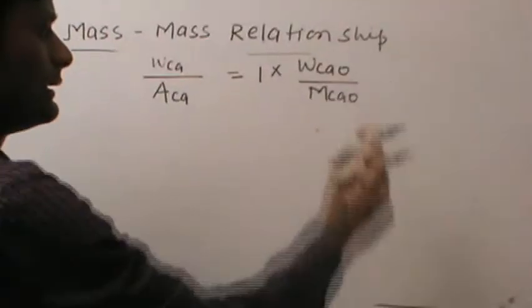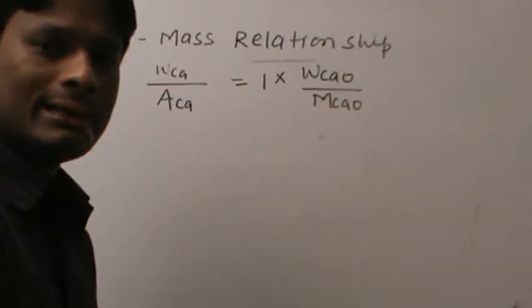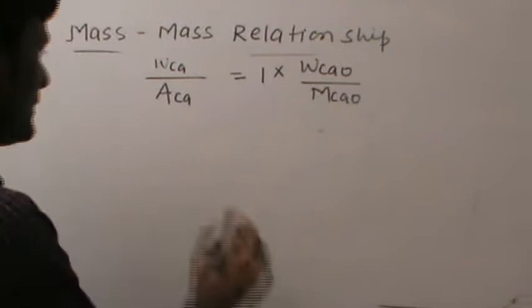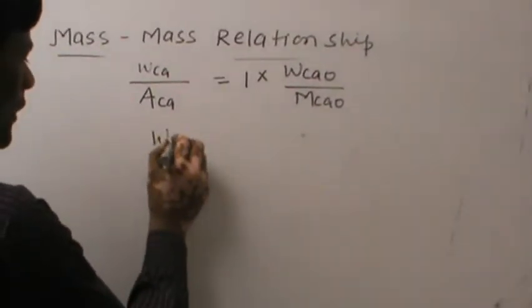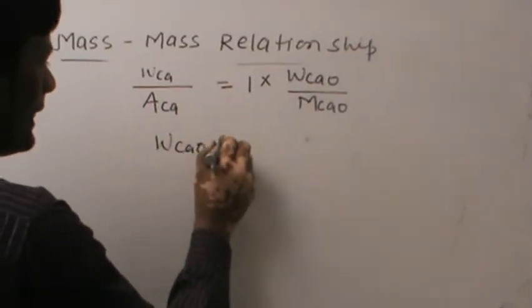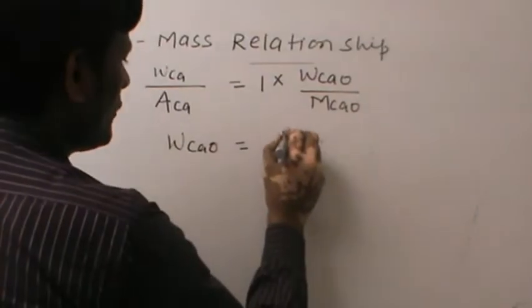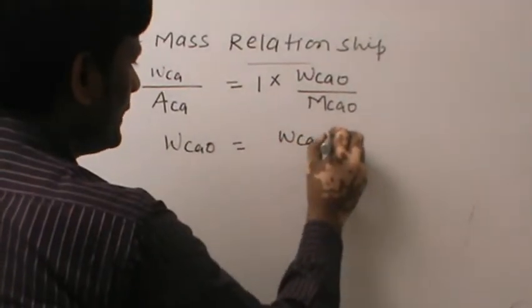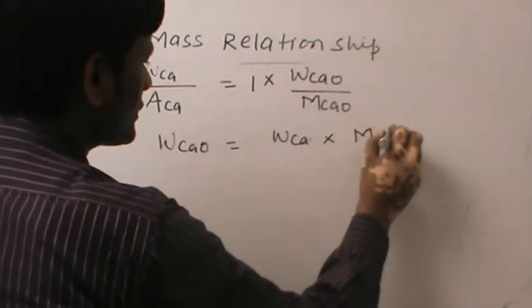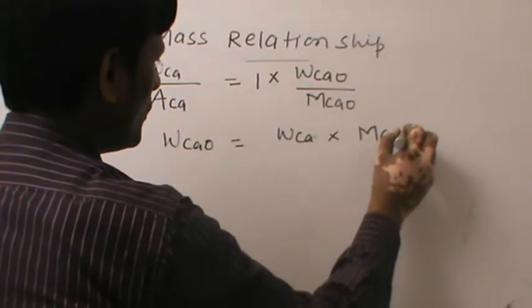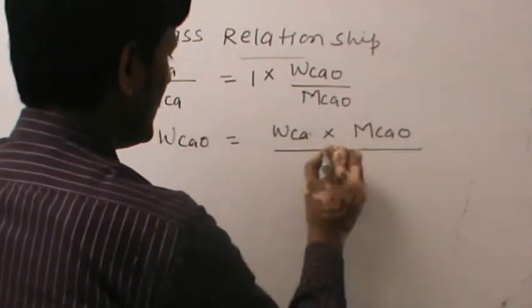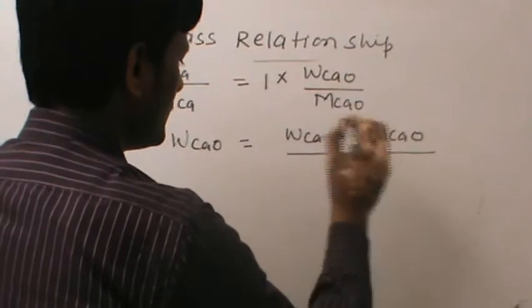Then, we have to calculate the amount of calcium oxide. That means, weight of CaO equals weight of Ca multiplied by molecular mass of CaO divided by atomic mass of Ca.